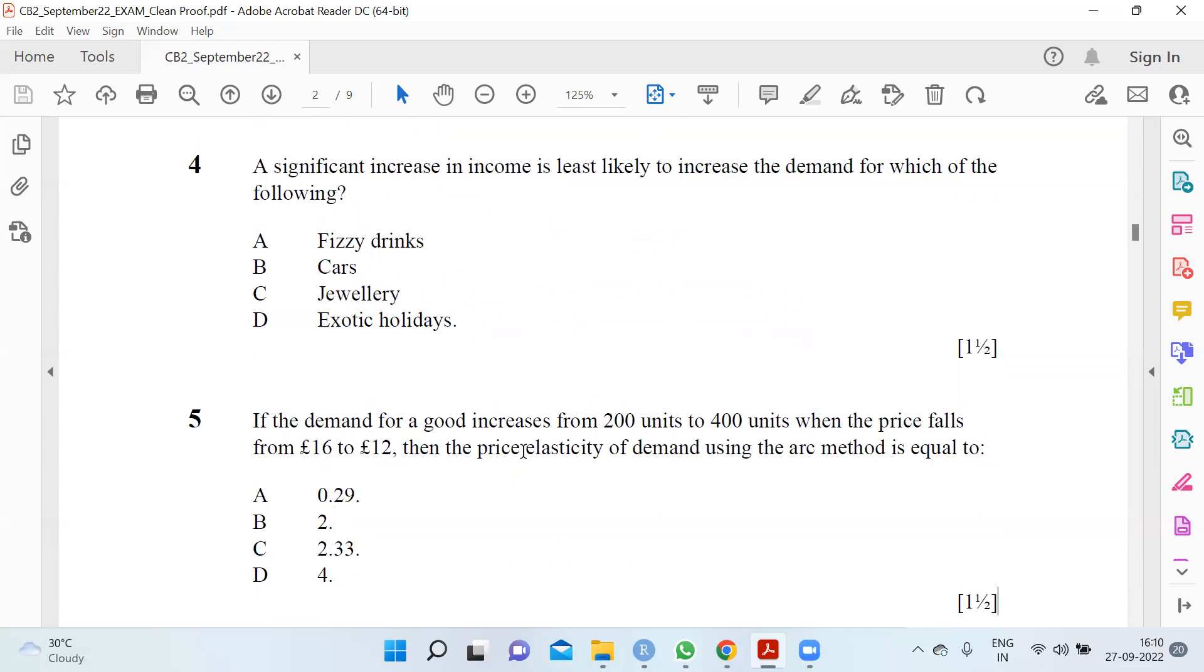Question number five: The demand for a good increases from 200 units to 400 units and the price falls from 16 to 12. The price elasticity of demand using the arc method is equal to 2.33 using the formula if you calculate.